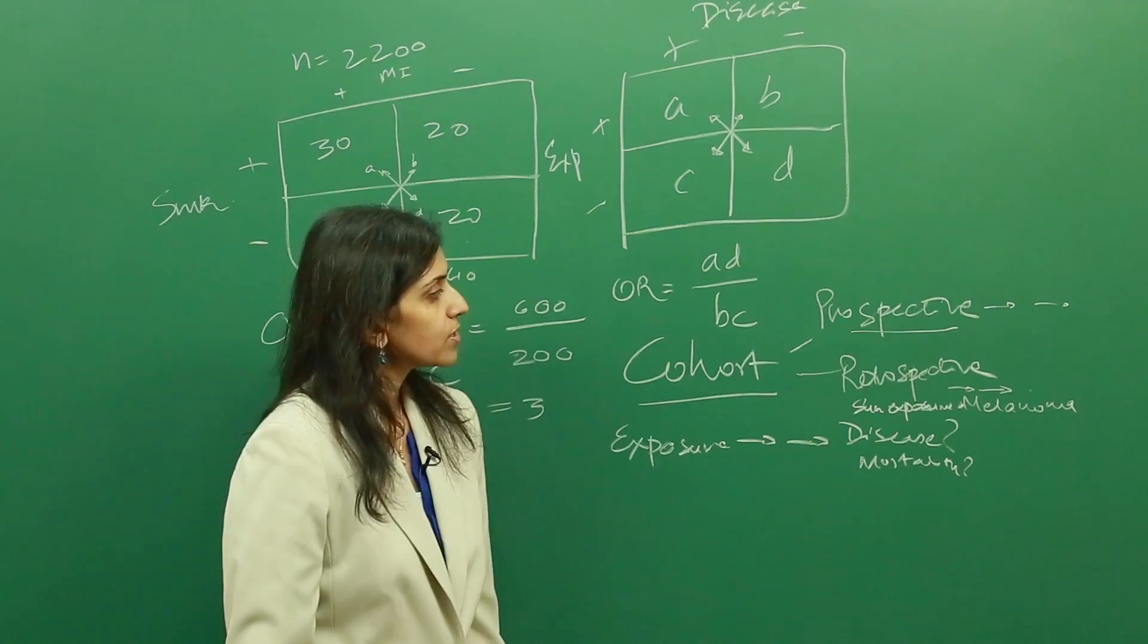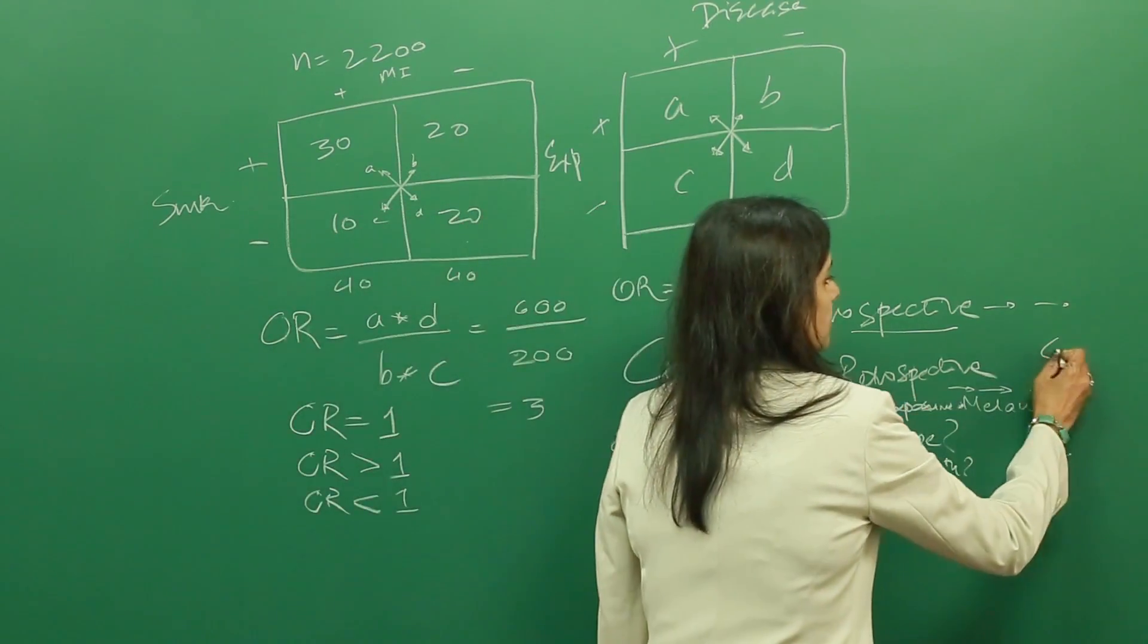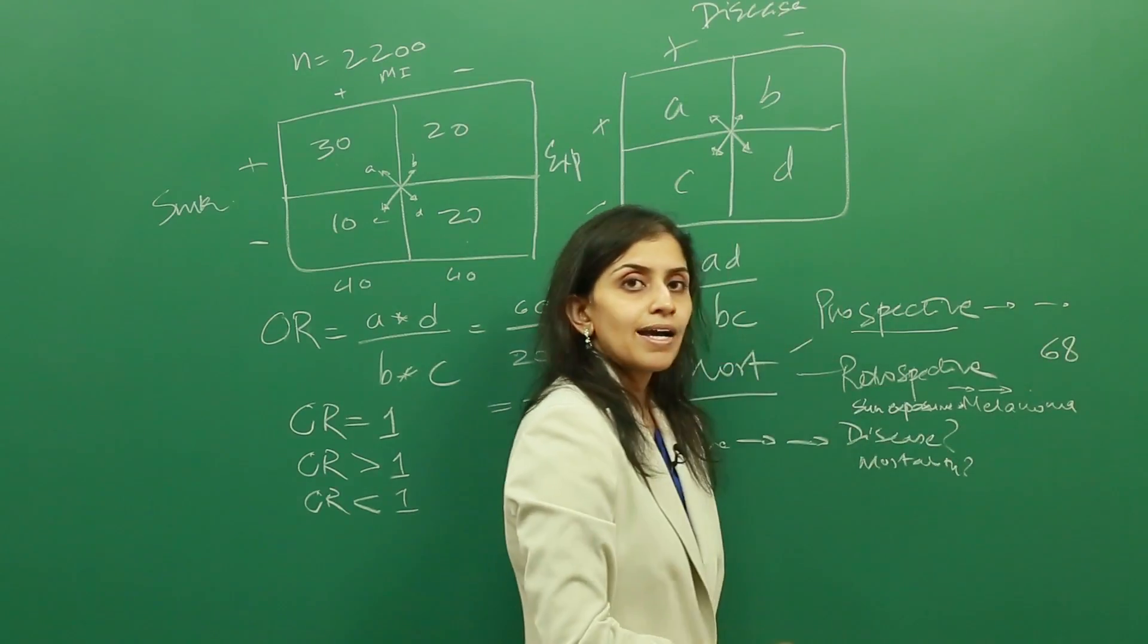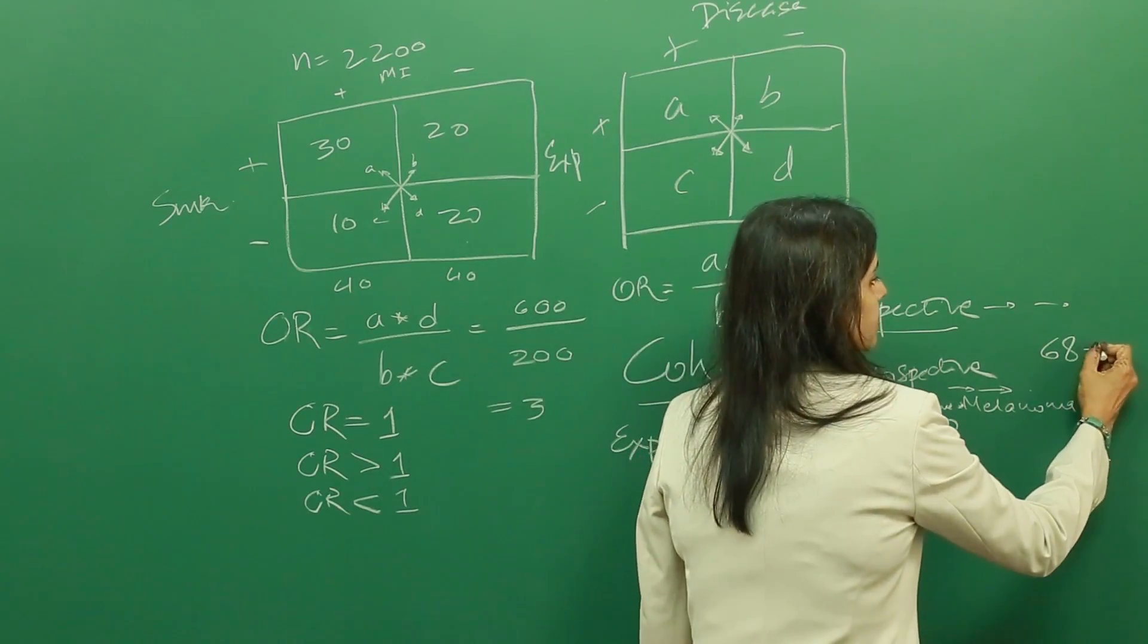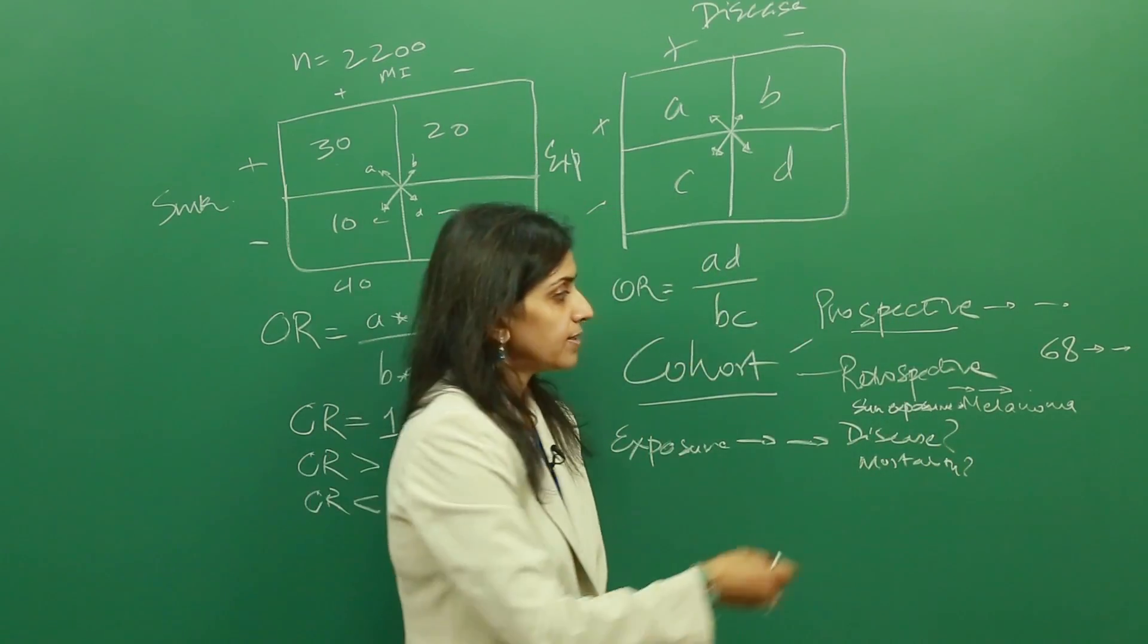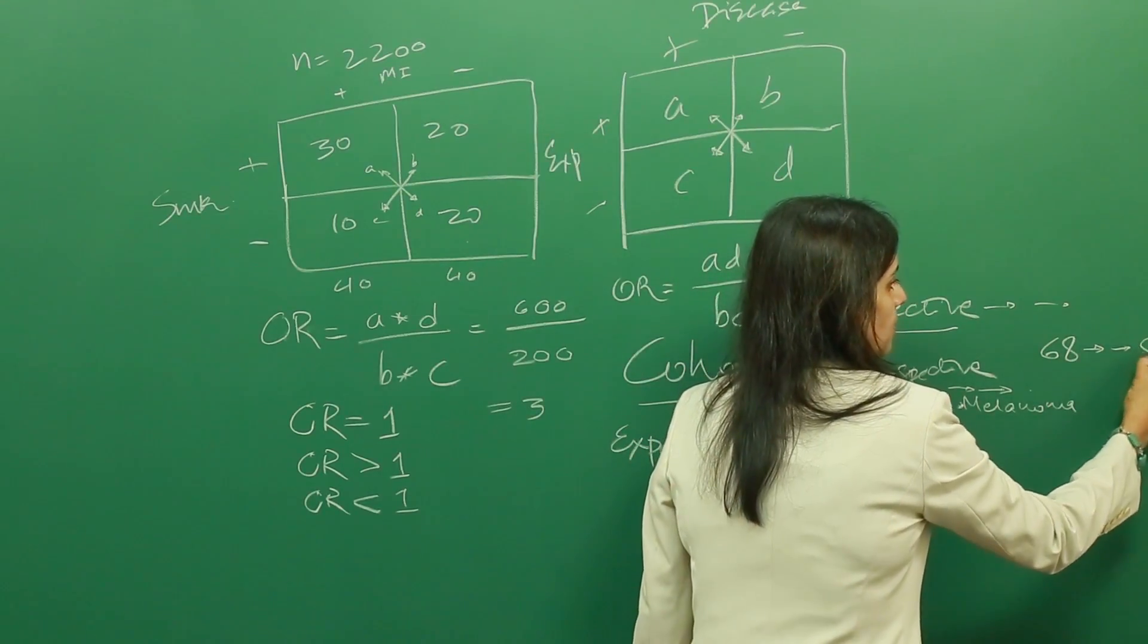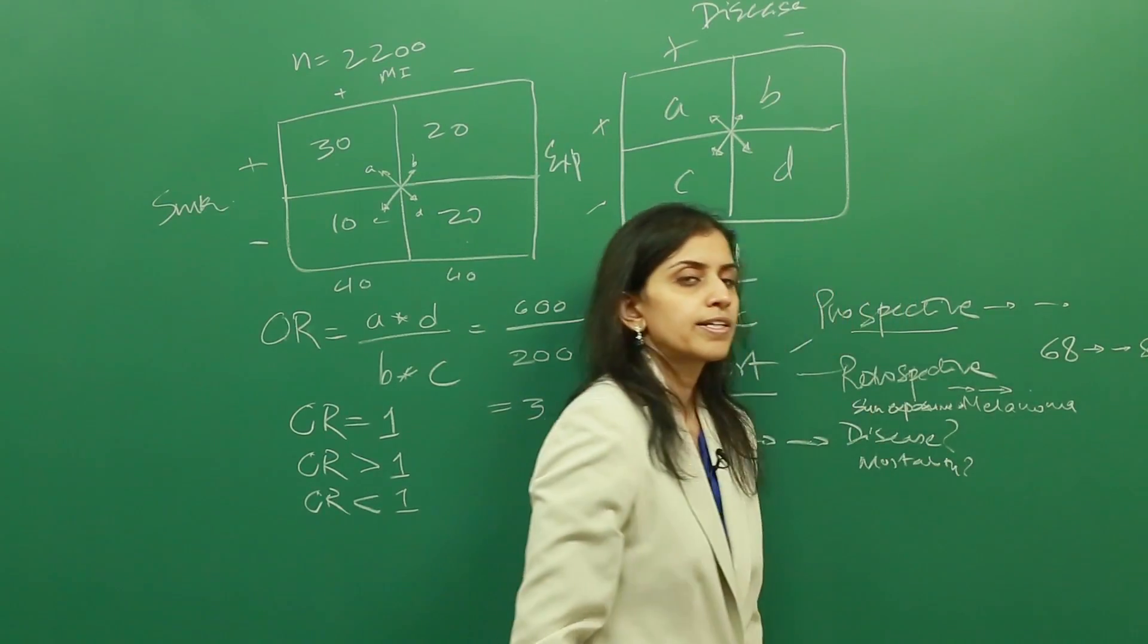So now what we can do is we can go back in time, we can look at the registry, we can start at a point in time. Let's say we started 1968, and then we can move forward and see how many of these people who were exposed to sun and who were sunburned then developed melanomas, let's say probably 20 years later, in 1988.